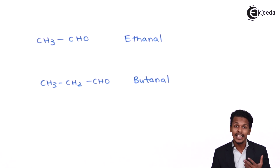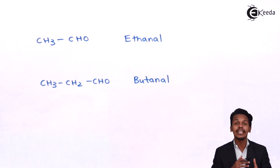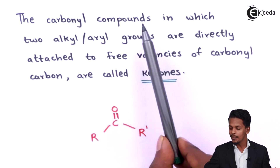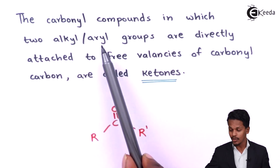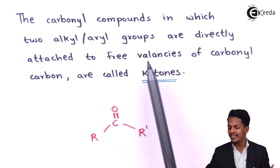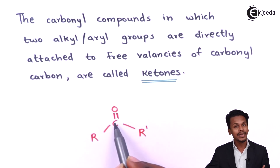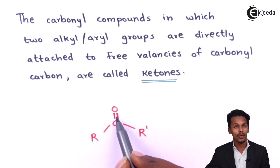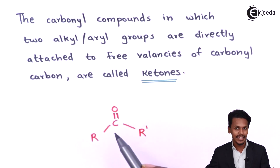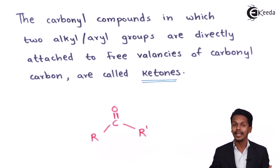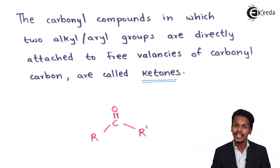So now let us discuss about ketones — what are ketones and what are the different types? Ketones are carbonyl compounds in which two alkyl or aryl groups are directly attached to the free valencies of the carbonyl carbon. The carbon has a carbon double bond oxygen — that is the carbonyl group — and the remaining two valencies are occupied by alkyl or aryl groups. That is why these are called ketones.